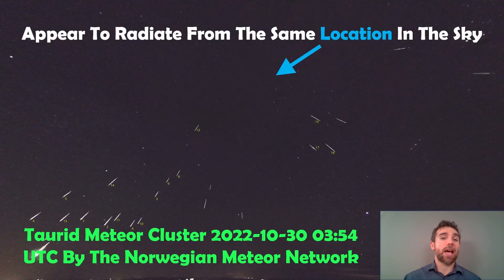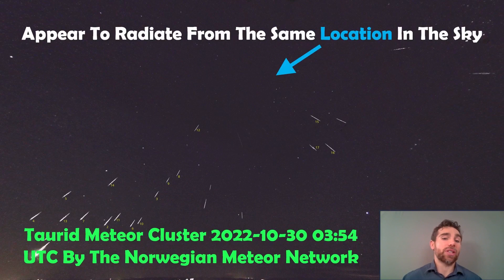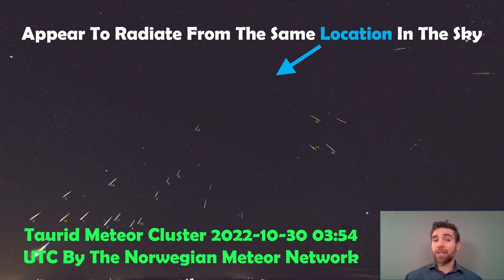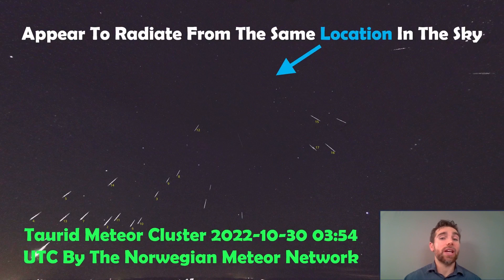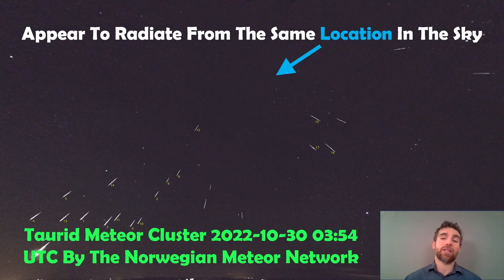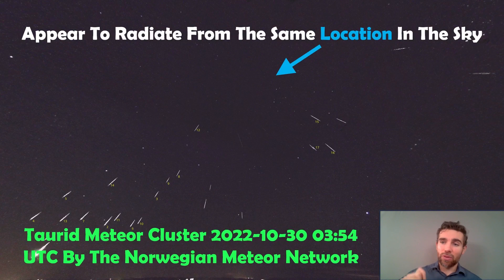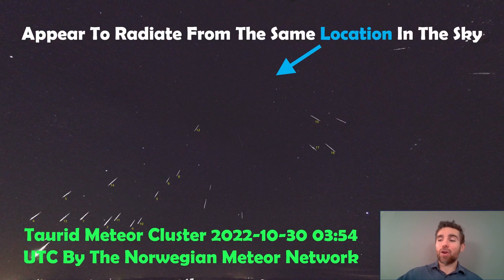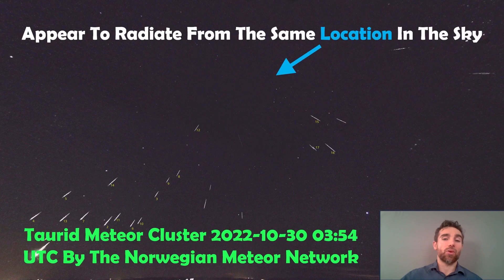This is basically just a snapshot of the video we just saw and it shows you the trajectories of each of those meteors. Now the interesting thing about a meteor shower is they will all appear to radiate from the same point in the sky, same location basically. If you have a look, if you were to draw those lines back up of the streaks that they've caused, they would have a common sort of location. They're all occurring in the same part of the sky.